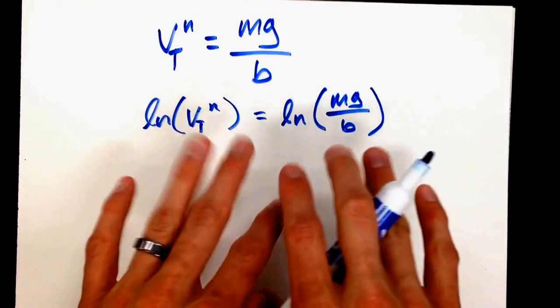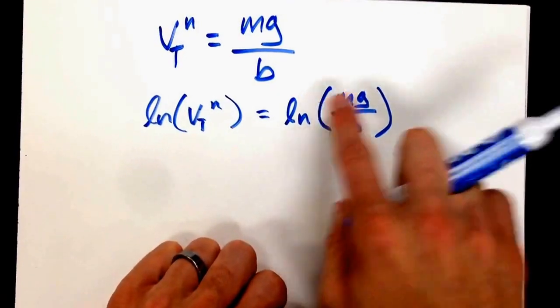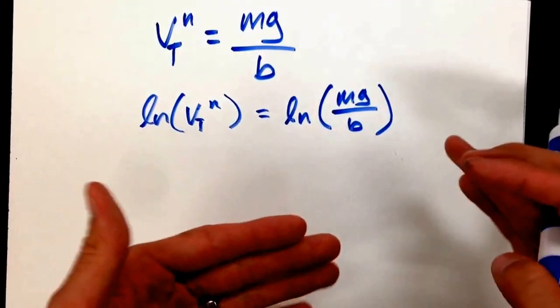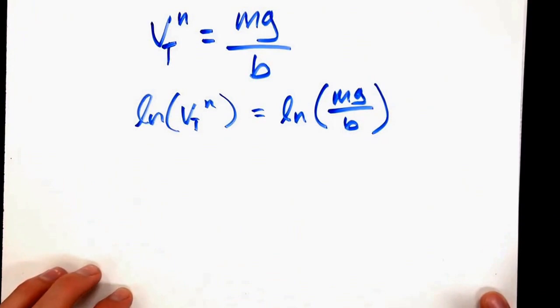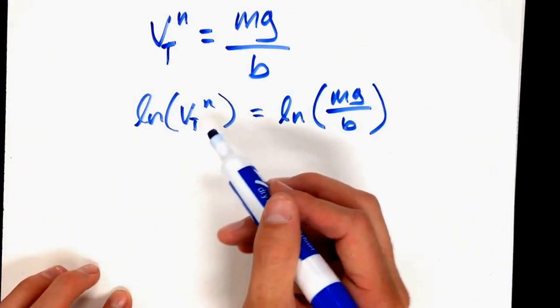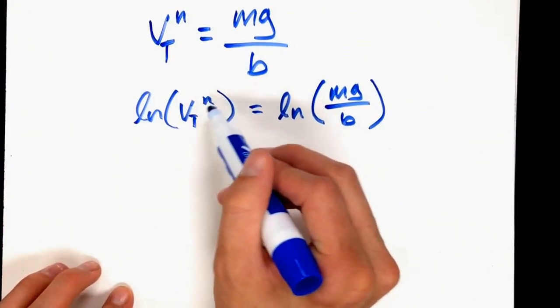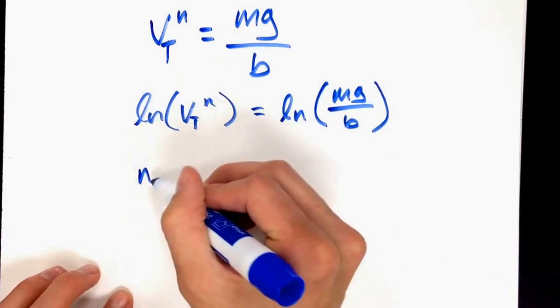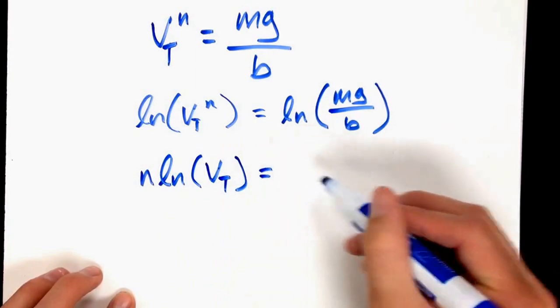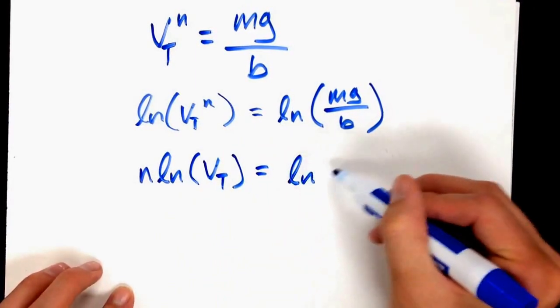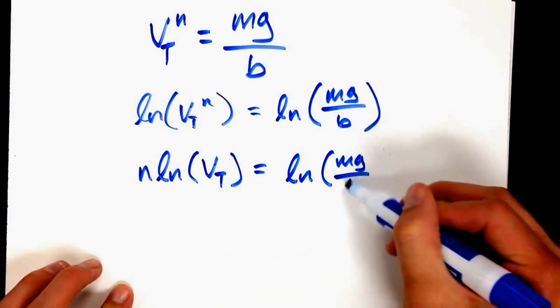With the rules of natural log, if you're multiplying, that's the natural log of sums, and if you're dividing, that's the natural log of a difference. For V_T to the n, I can take that n out and make it n natural log of V_T equals natural log of mg over b.